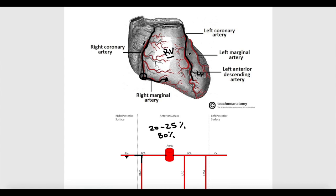After emerging, the left coronary artery divides into two main branches. The first is called the anterior interventricular artery, which runs in the anterior interventricular groove between the right ventricle and the left ventricle. This artery has another name more commonly used in clinical situations: the left anterior descending, or LAD for short. The anterior interventricular artery runs to the apex of the heart, winds around it, and anastomoses with the posterior interventricular artery.